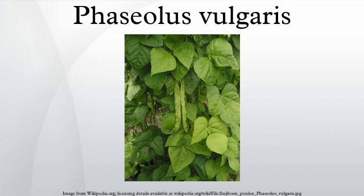Flageolet beans are often eaten in France. The seeds are small, light green, and kidney-shaped. The texture is firm yet creamy if shelled and cooked when fresh but semi-dry. Kidney beans, also known as red beans, are named for their visual resemblance in shape and color to kidneys. They are sometimes used in chili con carne and are an integral part of the cuisine in northern regions of India. They are also used in New Orleans and much of southern Louisiana for the Monday Creole dish of red beans and rice.